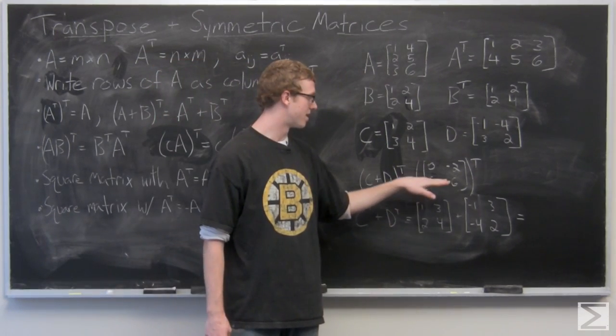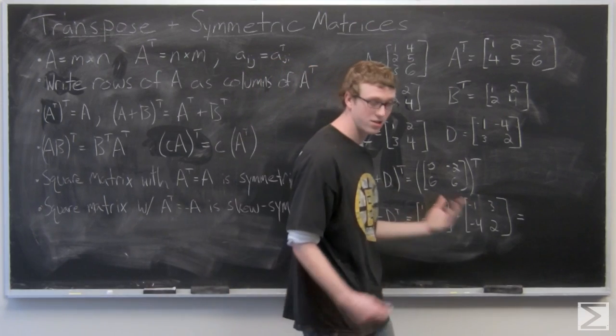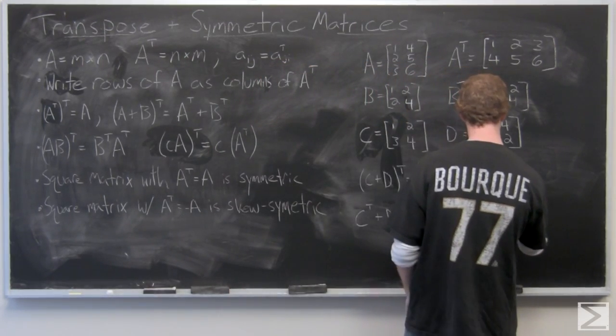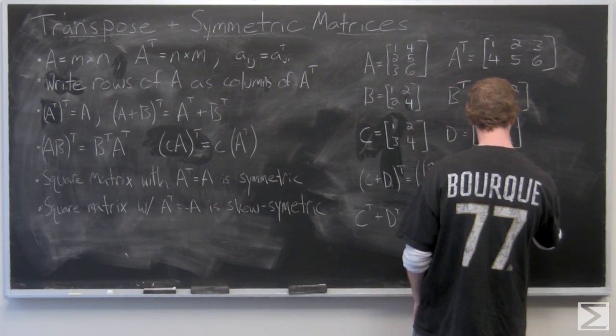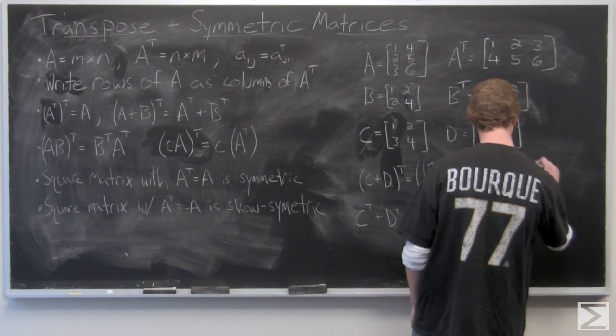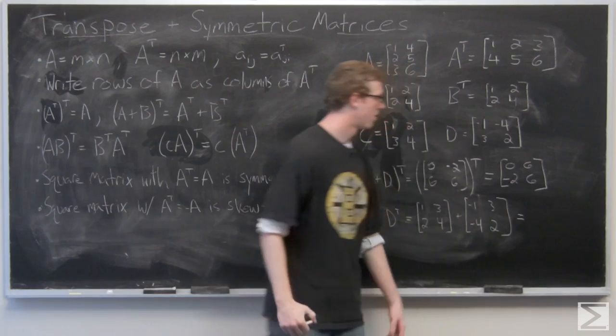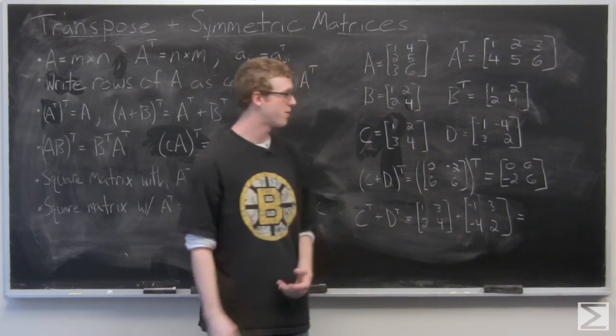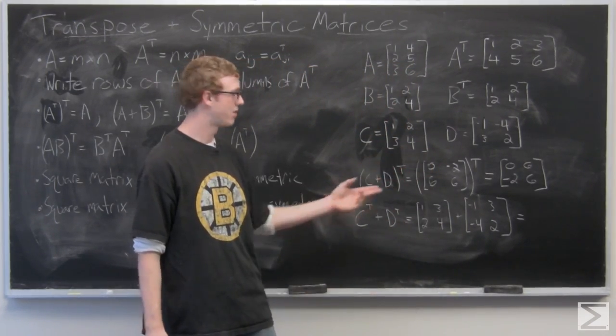So your C plus D is going to be 0, negative 2, 2, 6, 6. And just take the transpose of that. So the resultant transpose C plus D transpose is 0, 6, negative 2, 6.